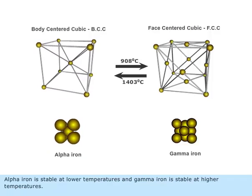Alpha iron is stable at lower temperatures, and gamma iron is stable at higher temperatures.